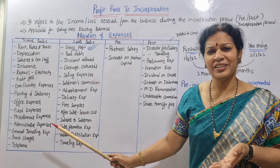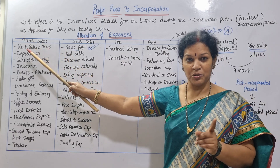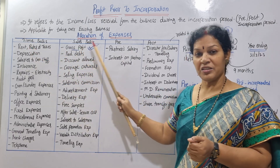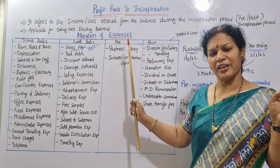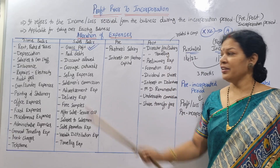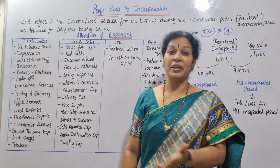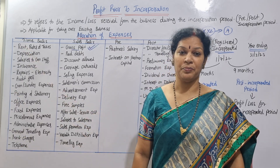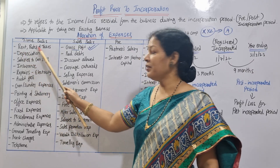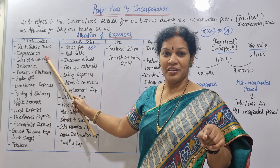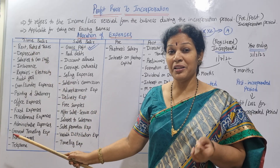Allocation of expenses can be done on either a time basis or a sales basis. On the time basis, we allocate fixed expenses proportionally to the time periods. Examples of time basis expenses include rent and rates, taxes, depreciation calculated yearly, insurance on a yearly basis, repairs, electricity, and audit fees.